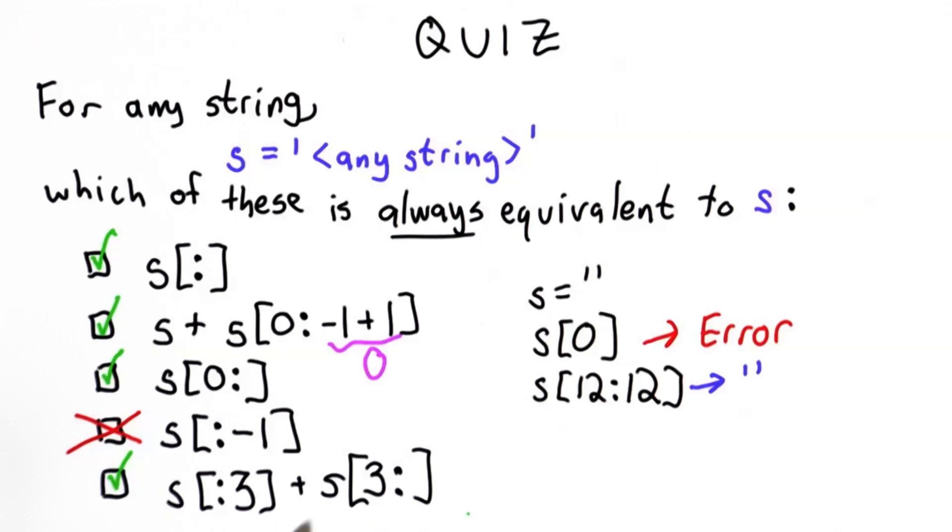If s has less than three characters, well, this is going to be empty. There are no characters from position 3 to the end. But that's okay. We're going to add the empty string to the characters before position 3.